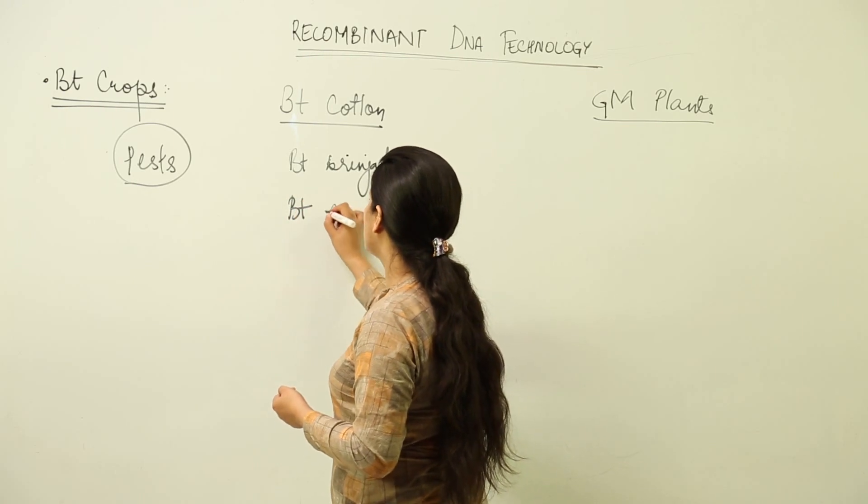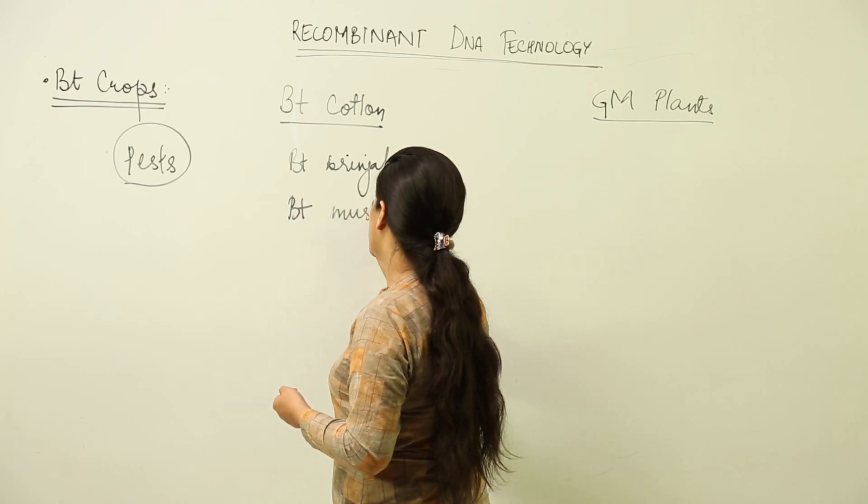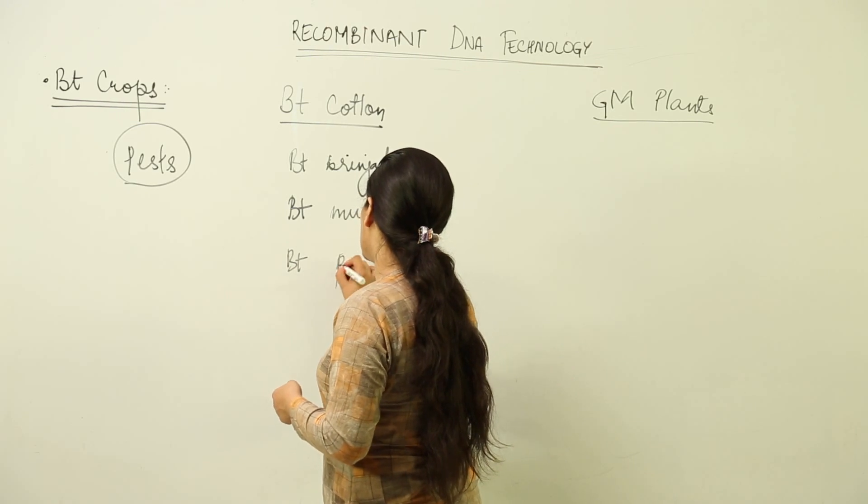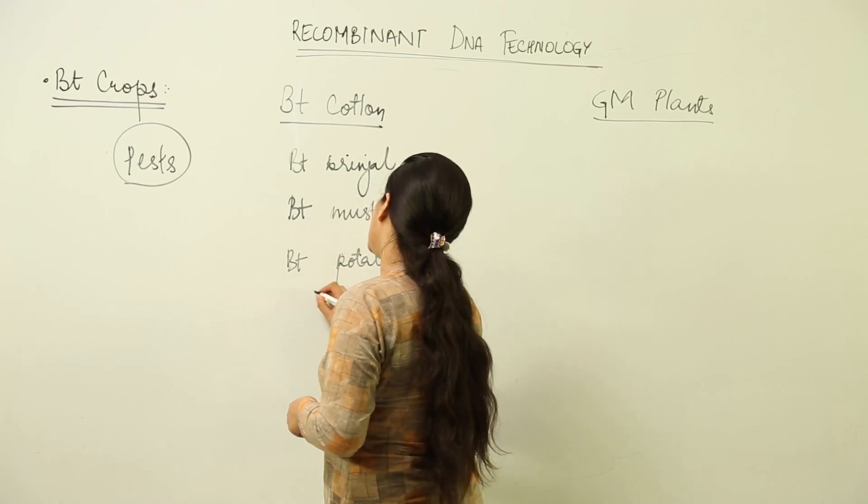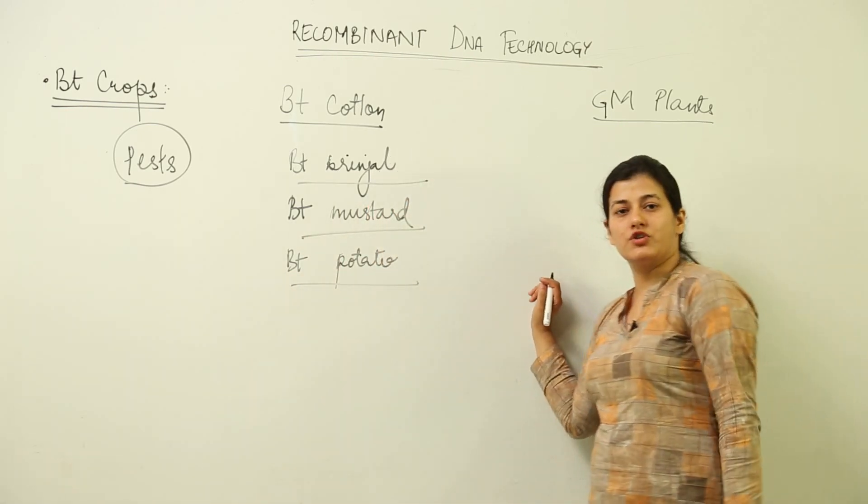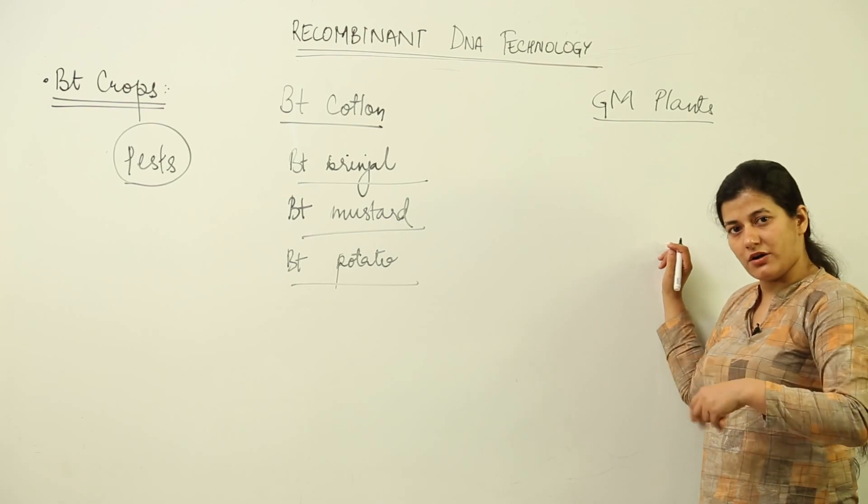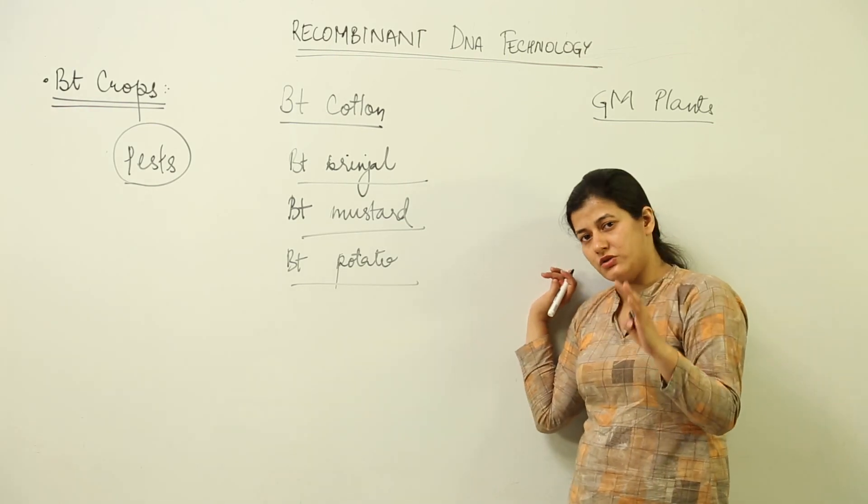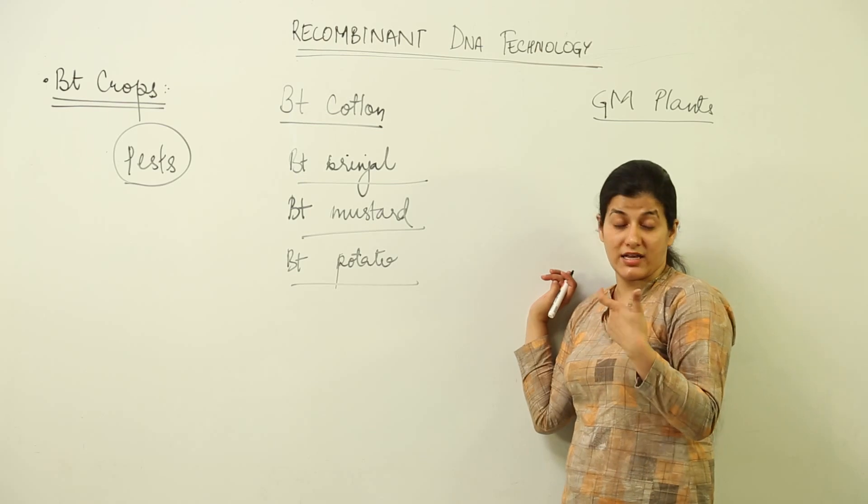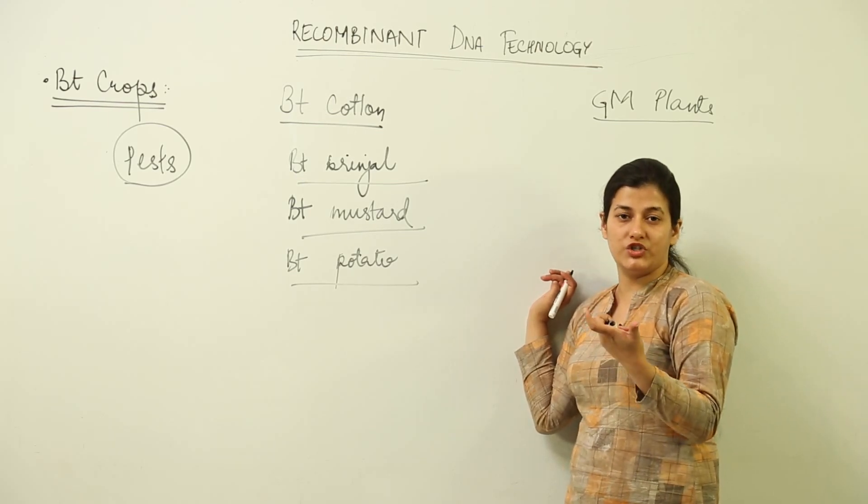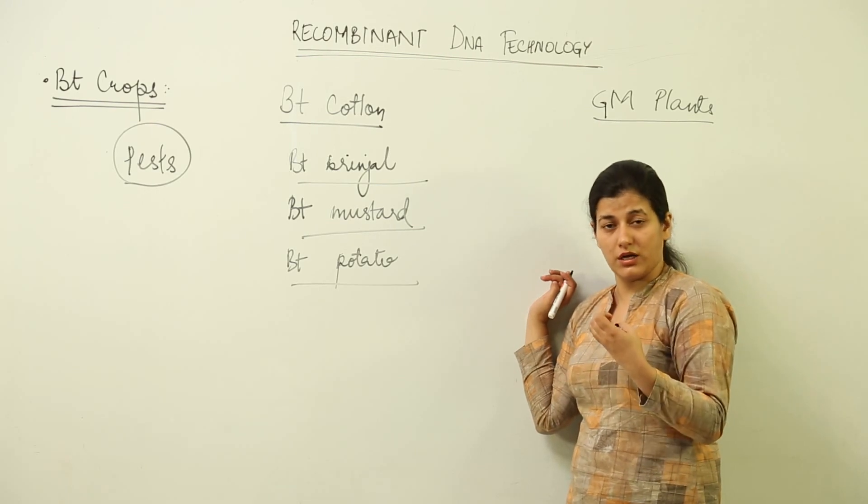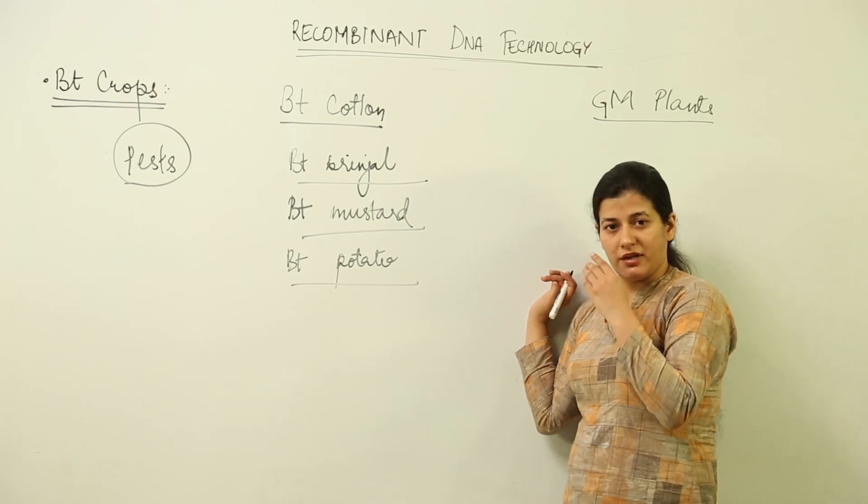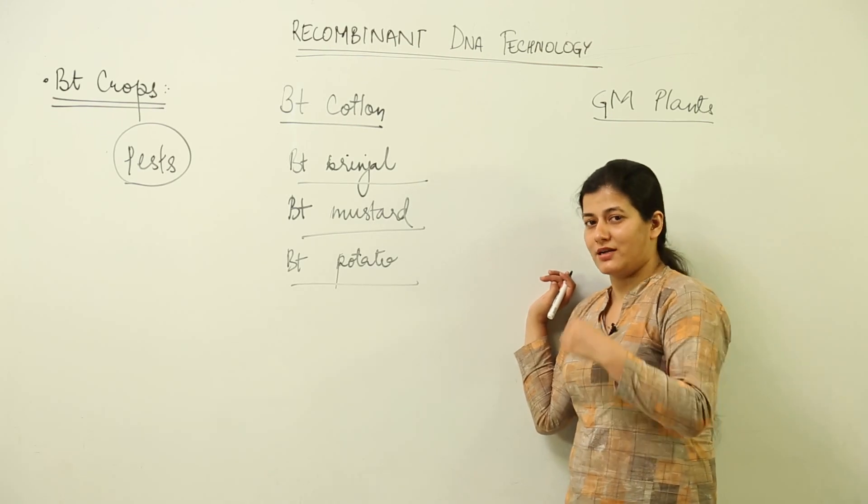There are crops like BT mustard and BT brinjal, but only BT cotton has found its way into the fields. BT mustard and BT potato - all these crops are somewhere in files and their field tests are being done to ensure that once they've been introduced into agriculture, they're not putting any adverse effects on the ecosystem. There are very few countries, not more than 10 on a global scale, which have actually introduced GM crops into their agriculture sector.